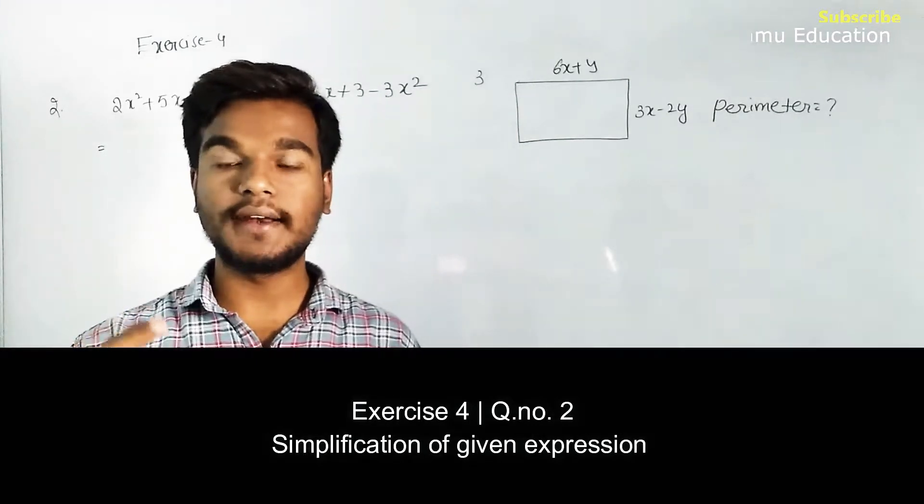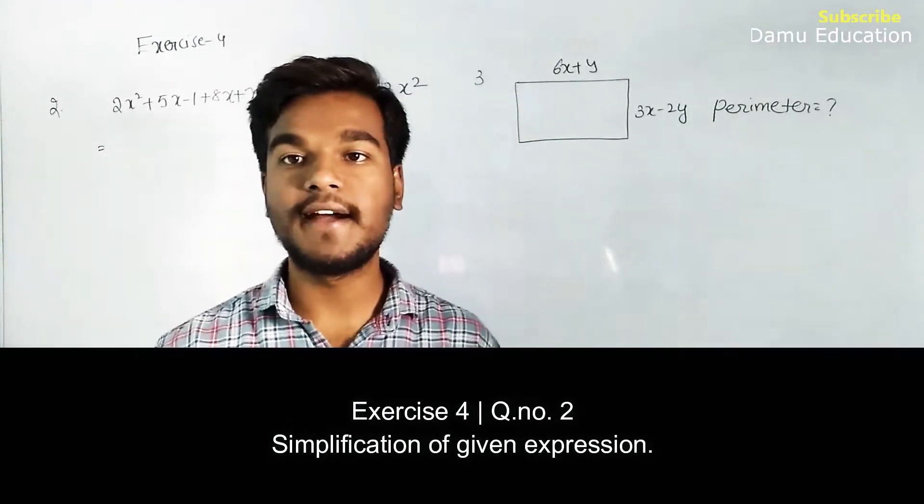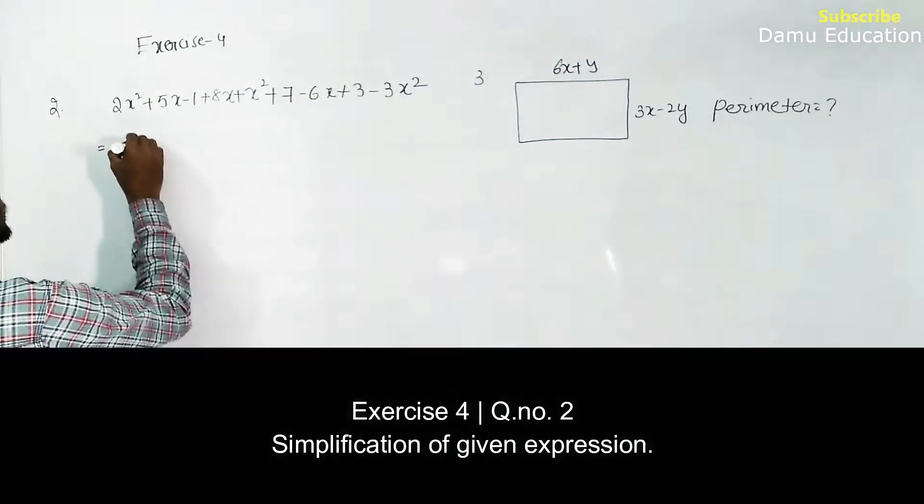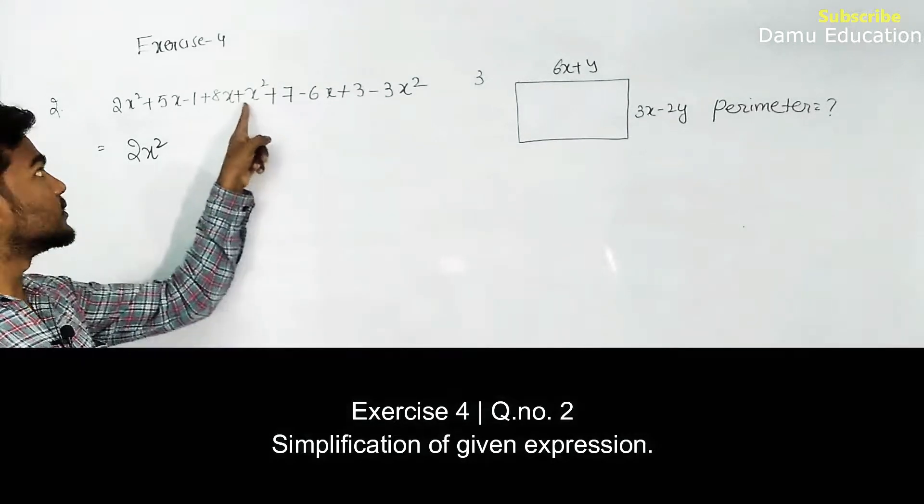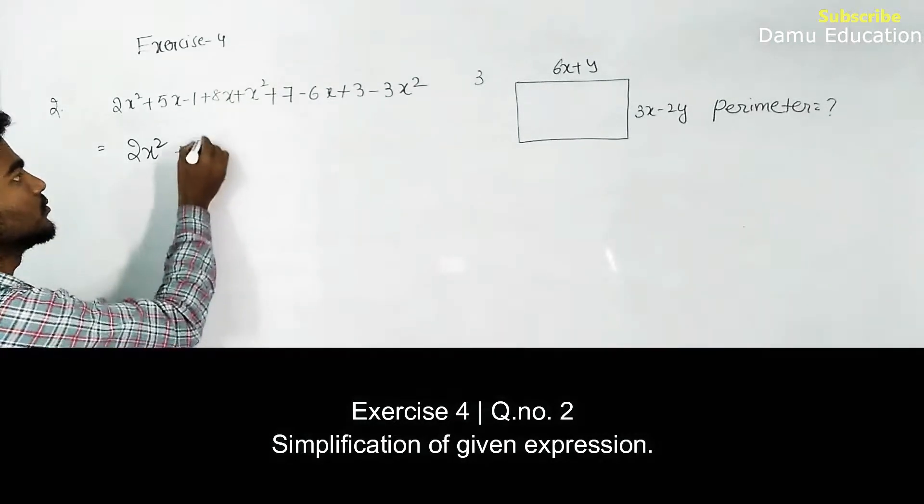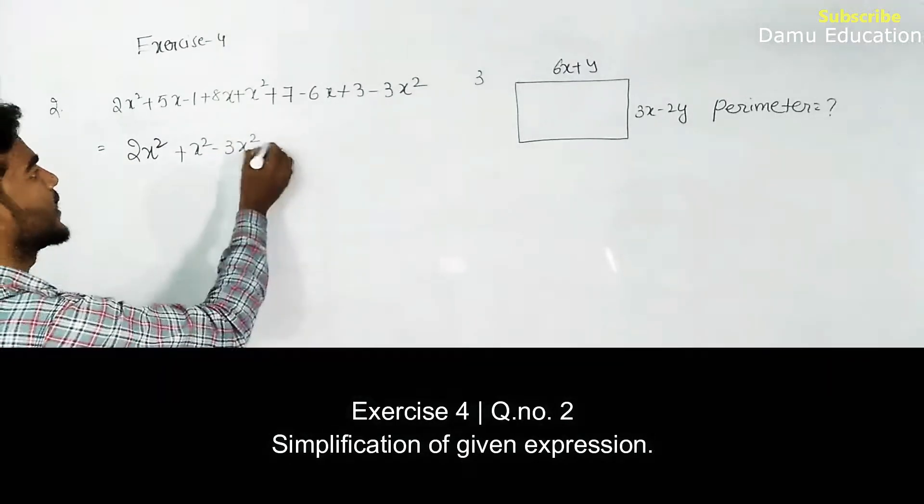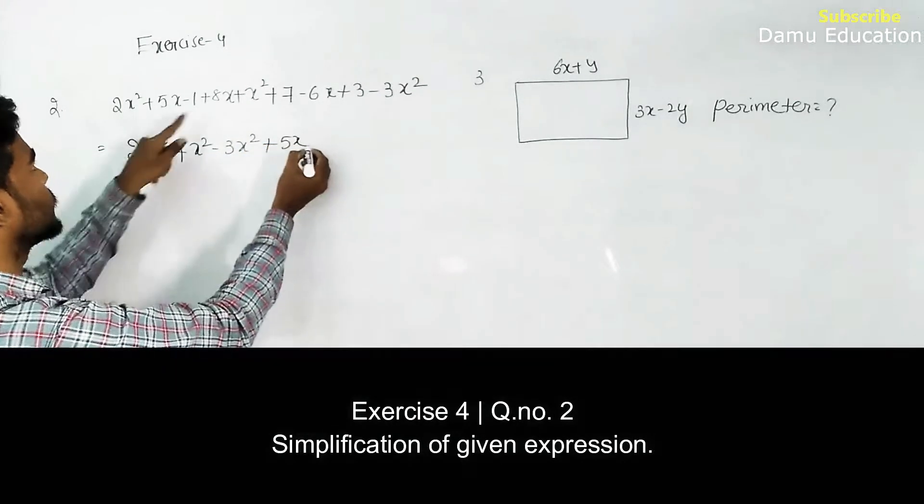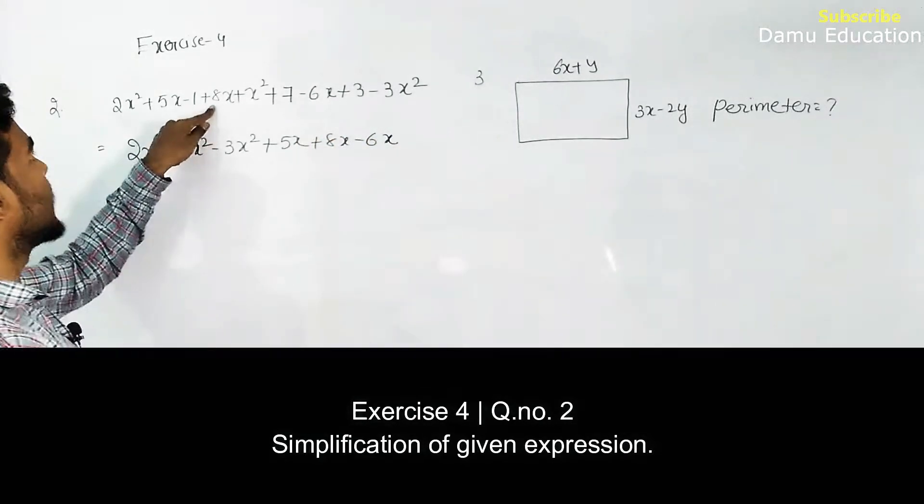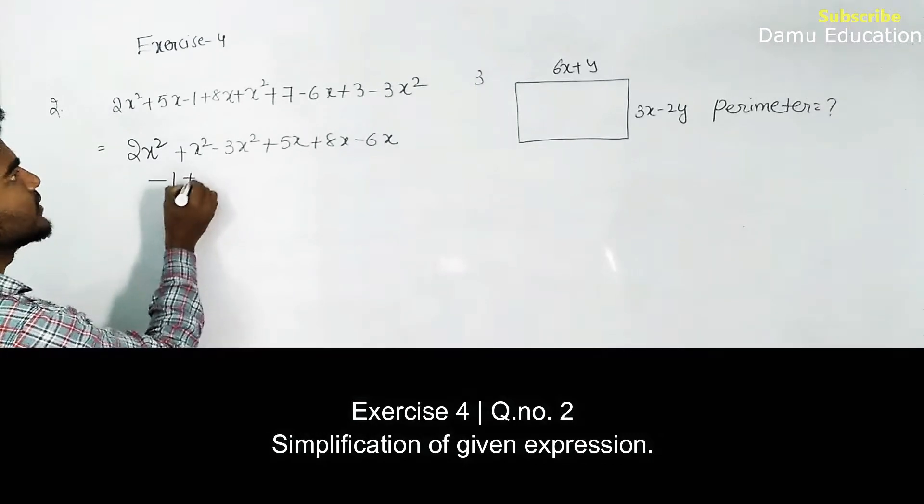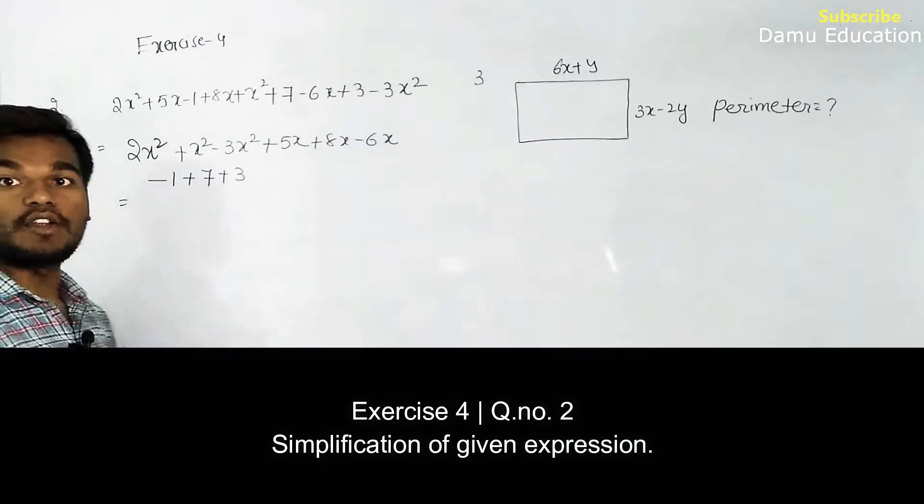So 2x² is there, any other x² terms? Yes, plus x² then minus 3x². Finished. Then go for x terms: 5x plus 8x minus 6x. Then again go for the constants: minus 1 plus 7 plus 3.